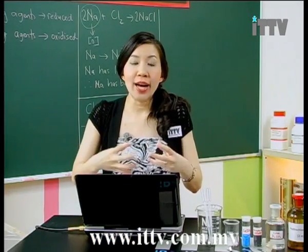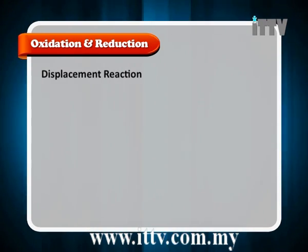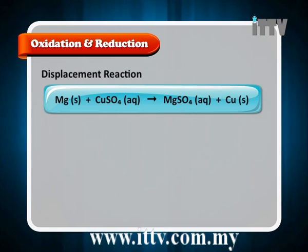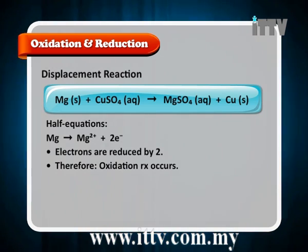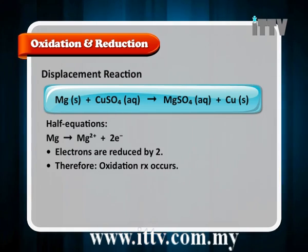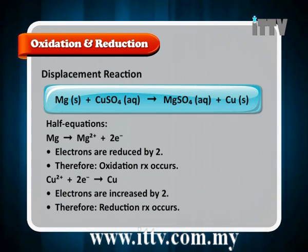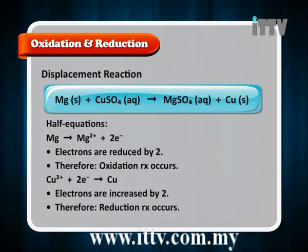That was the third parameter to define oxidation-reduction reactions. For a displacement reaction: magnesium reacts with aqueous copper sulphate solution to produce magnesium sulphate and solid copper. From the half equations, magnesium becomes Mg²⁺ by releasing two electrons — electrons decrease by 2, so oxidation has occurred. Copper(II) ions gain 2 electrons to become copper — electrons increase by 2, so reduction occurs.